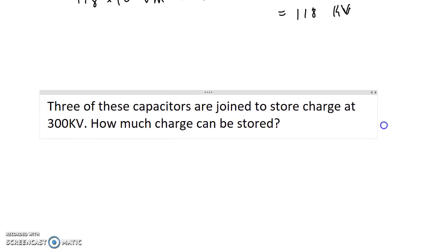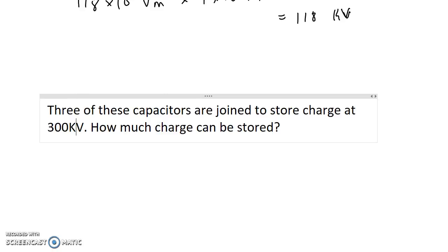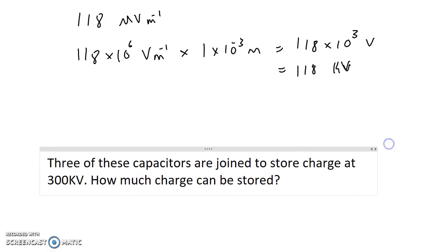Next up, we're going to take three of these capacitors. So the capacitor we just talked about, we're going to take two more, and join them in a configuration so that we can store charge at 300 kilovolts. We want to know how much charge can be stored. The first thing we need to recognize is that we're trying to store charge at a higher voltage than the breakdown voltage for the single capacitor. So we're going to have to join these three capacitors in such a way that none of them are exposed to a voltage higher than 118 kilovolts.